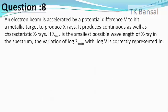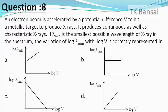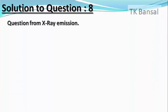Our next question is: If an electron beam is accelerated by a potential difference V to hit a metallic target to produce X-rays, it produces continuous as well as characteristic X-rays. If λ_min is the smallest possible wavelength in the X-ray spectrum, the variation of log of λ_min with log of V is characteristically represented in which option? It is a rather simple question from X-ray production.